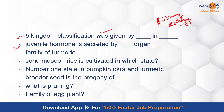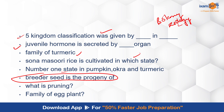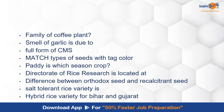A juvenile hormone is secreted by the family of turmeric — the Zingiberaceae family. Sona Masuri cultivated state, the number one state in pumpkin, okra, and turmeric — these types of questions were there. Most importantly, breeder seed is the progeny of nucleus seed — these questions were there. Again, we cannot say these are difficult questions; they are very obvious. Family of eggplant — you will know this — it is very simple and direct-to-the-point questions.